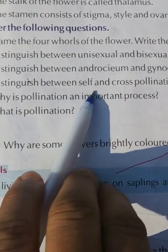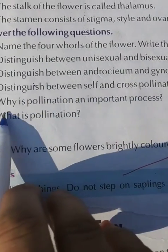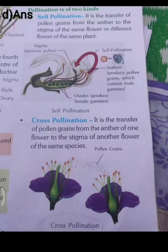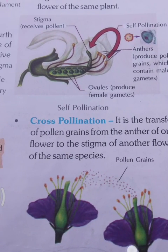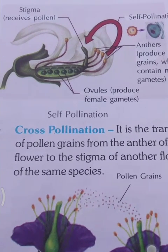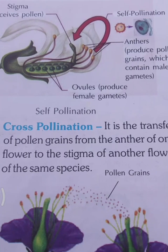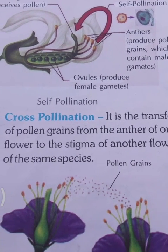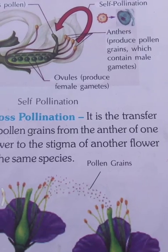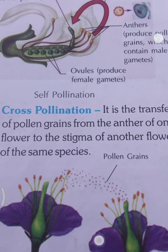D: distinguish between self-pollination and cross-pollination. Fourth answer: self-pollination is the transfer of pollen grains from the anther to the stigma of the same flower or a different flower of the same plant. Cross-pollination is the transfer of pollen grains from the anther of one flower to the stigma of another flower of the same species.